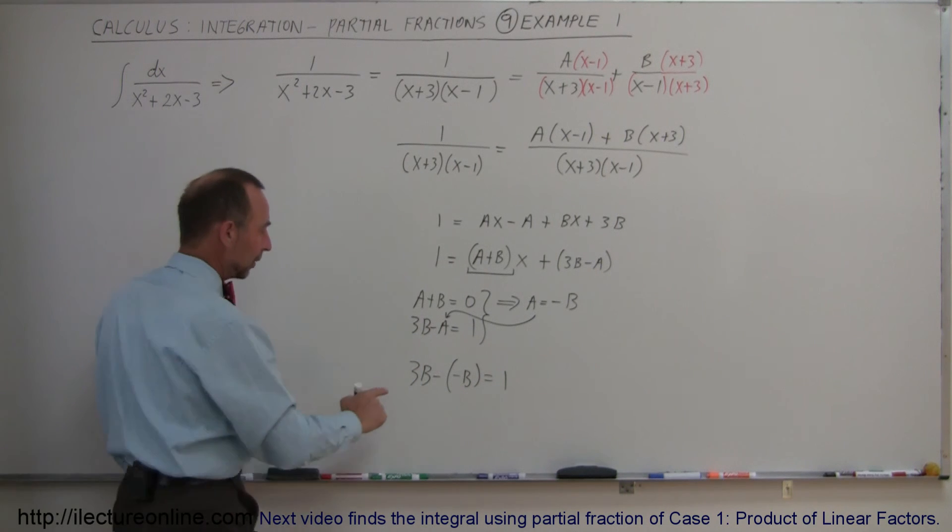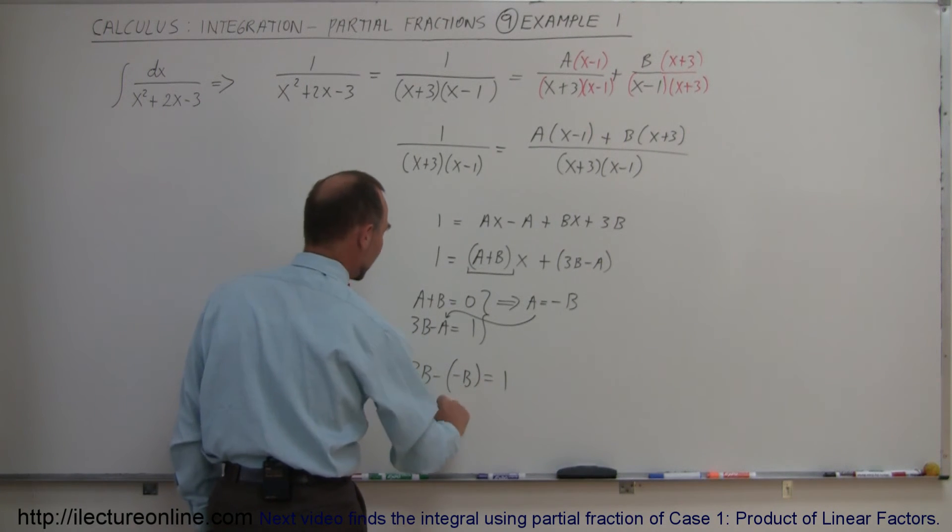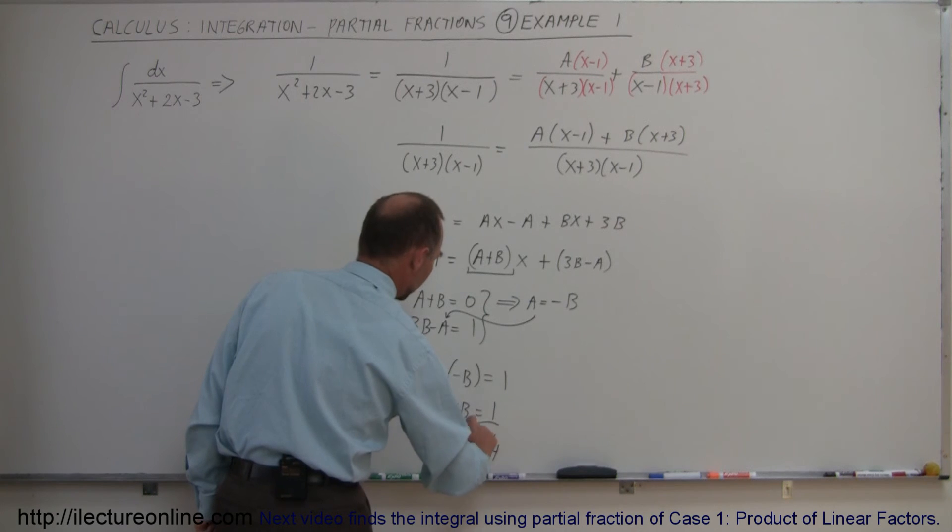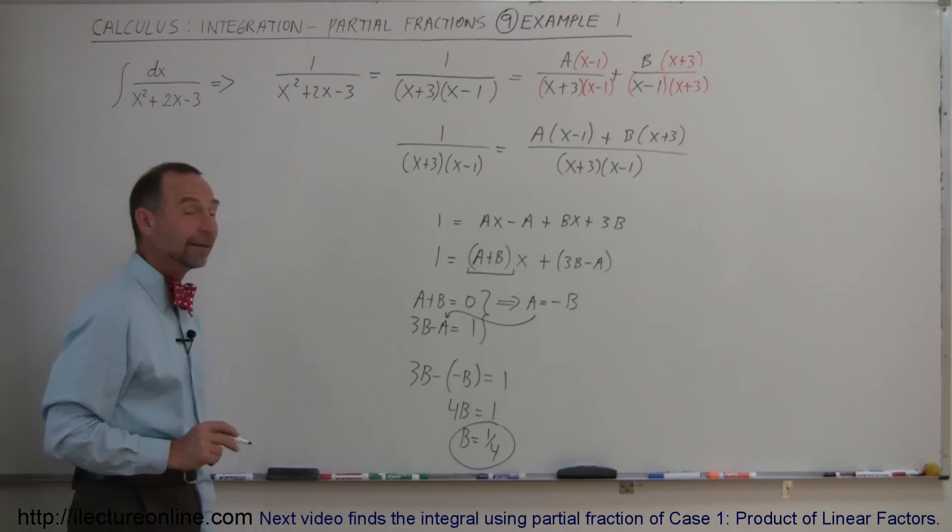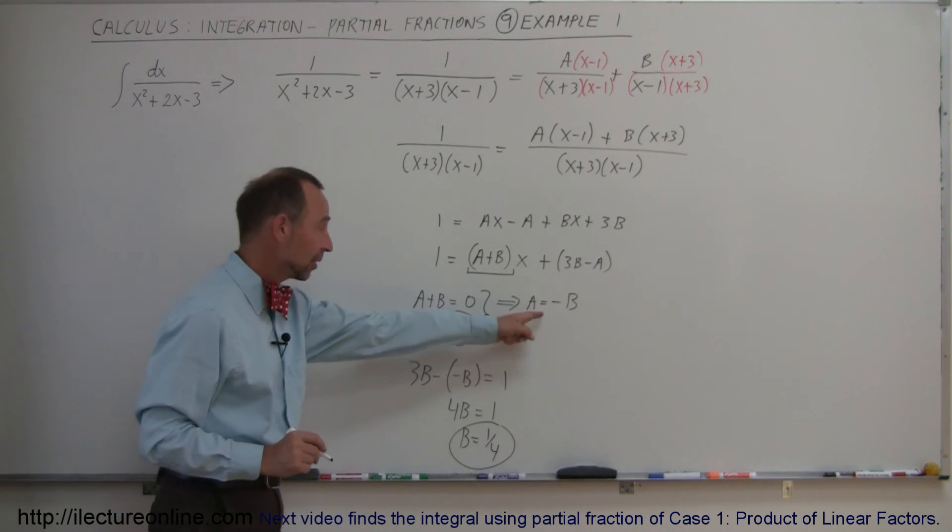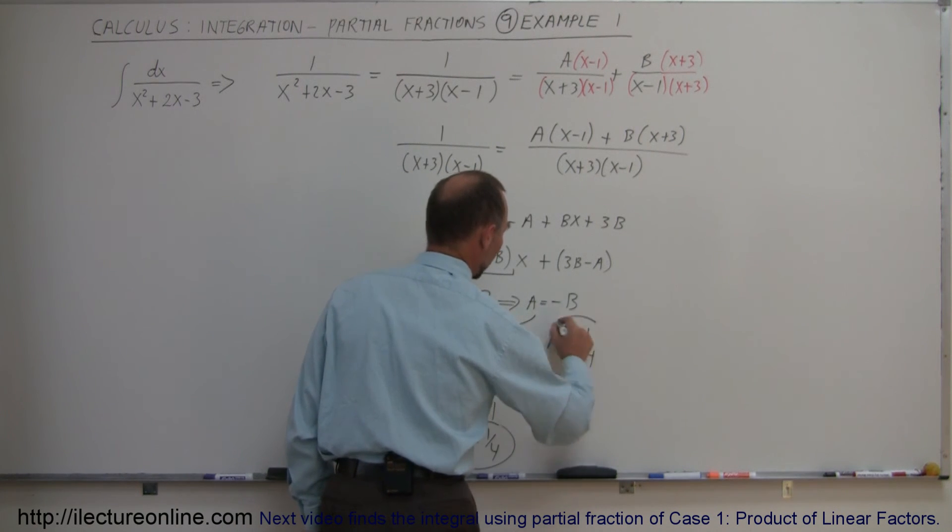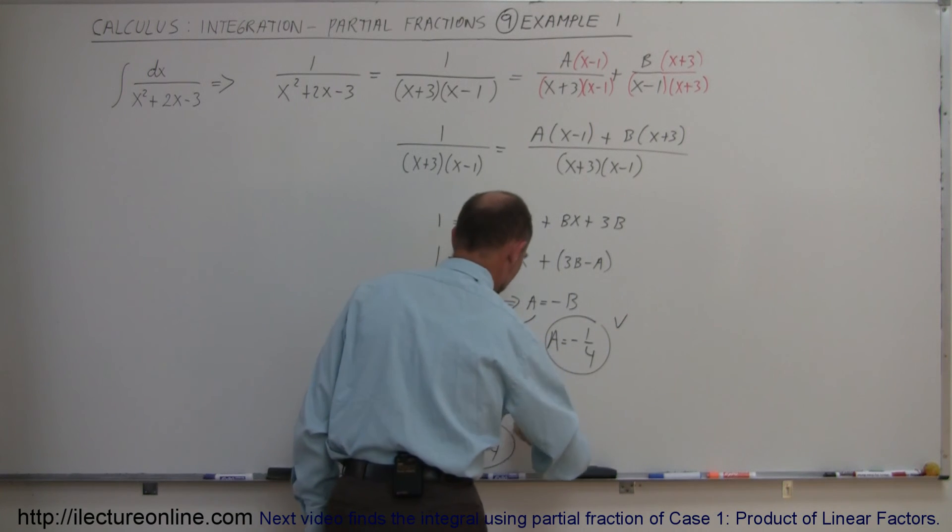So then I can say, well, 3B minus times a minus B, that means 4B is equal to 1, which means B is equal to 1 over 4. So now I have my first constant. Now I can go ahead and find my second constant, because A equals minus B, that means A is equal to minus 1 fourth, right there. And now I have A and B decided.